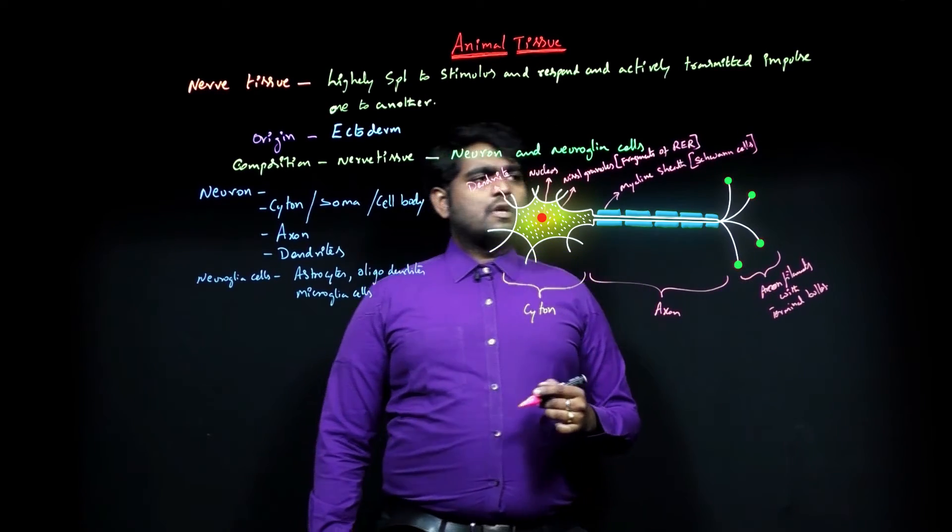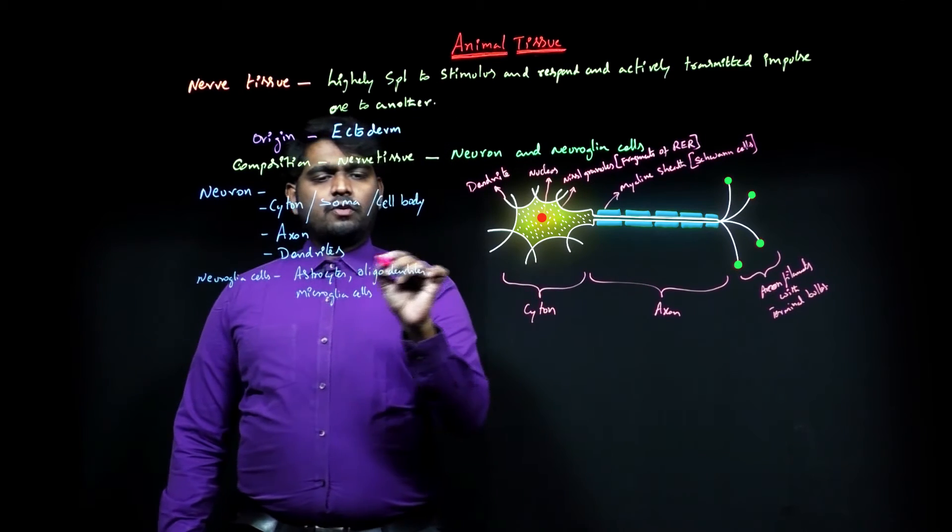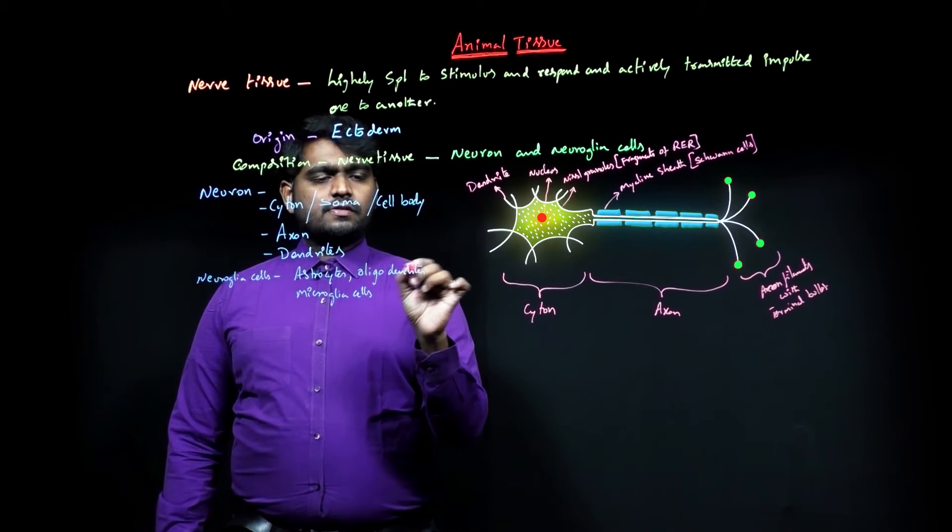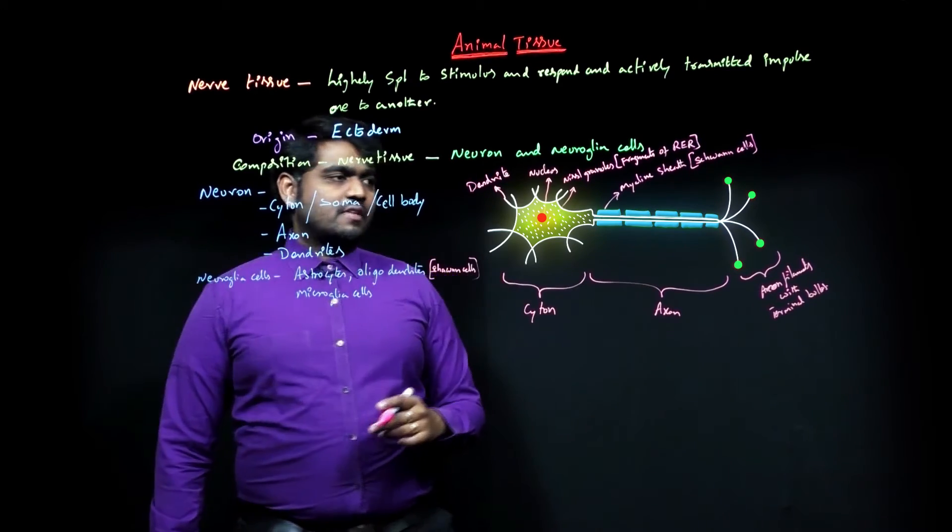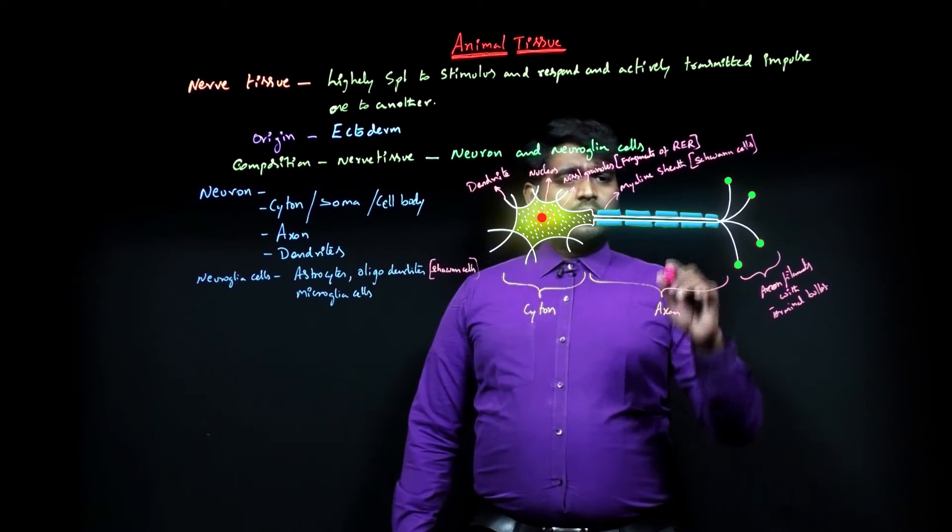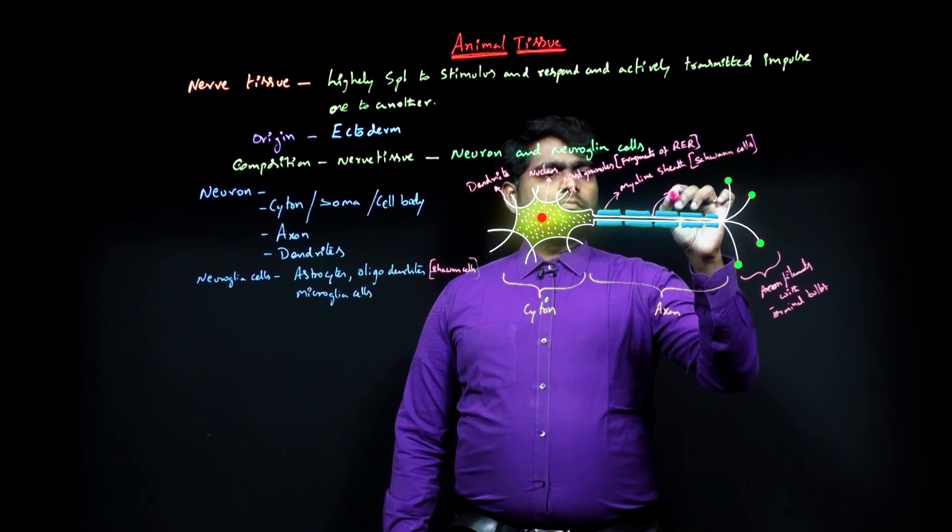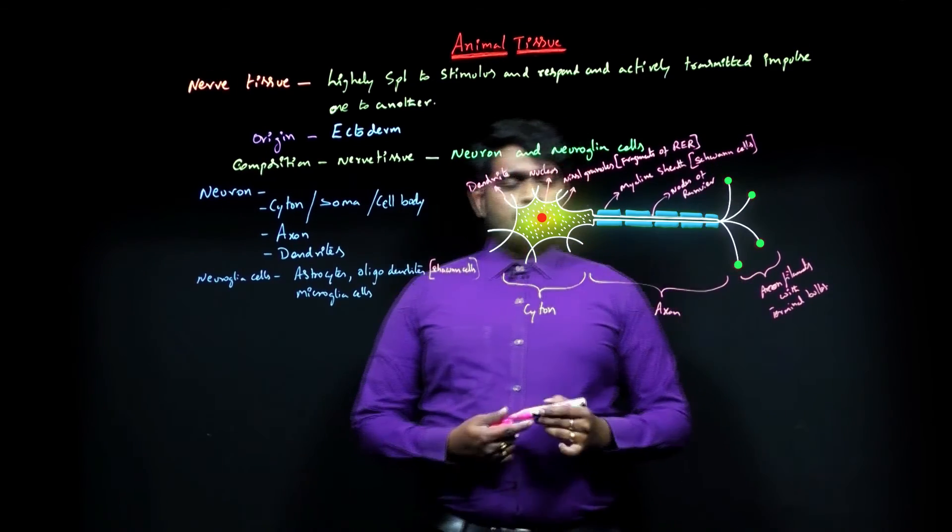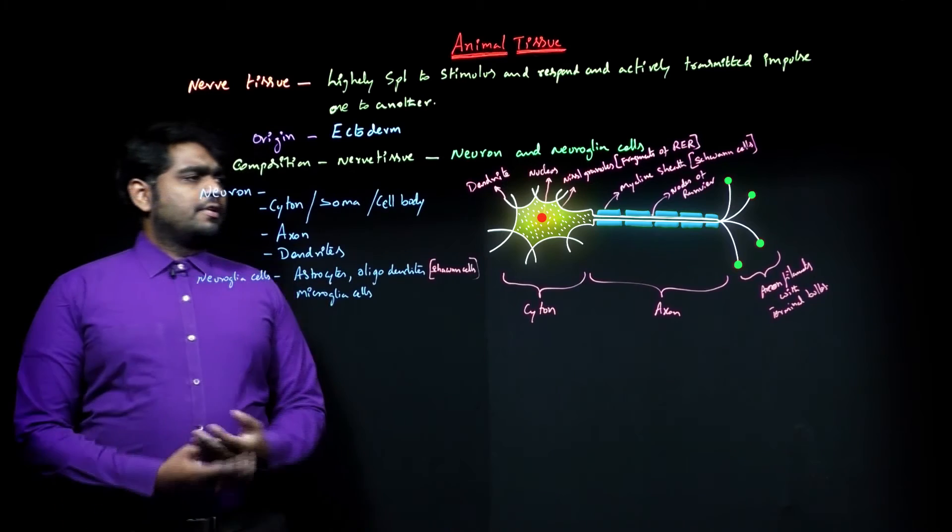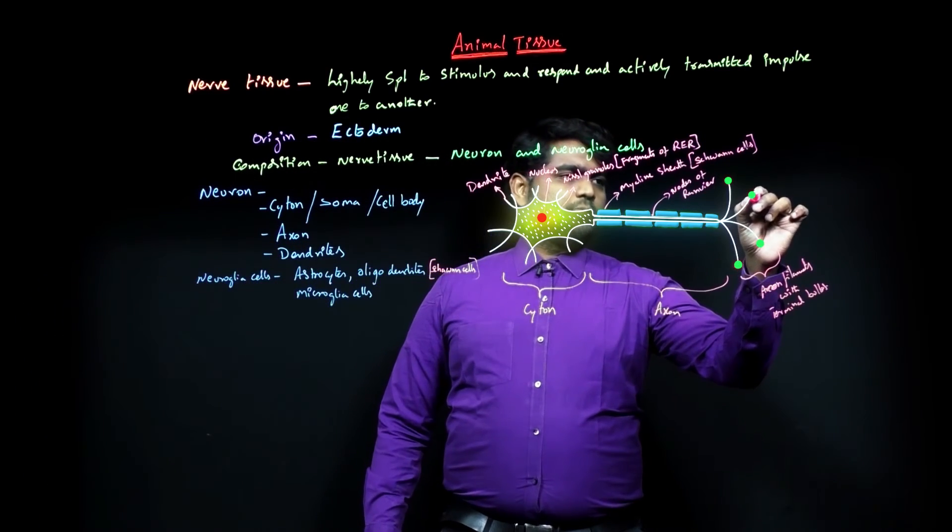Schwann cells, also called oligodendrocytes. These oligodendrocytes also called Schwann cells. And there is a gap here; this gap is called nodes of Ranvier. So this is the complete diagram about neuron. One more thing, these are axon bulbs.